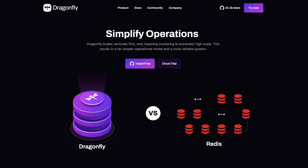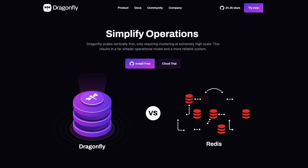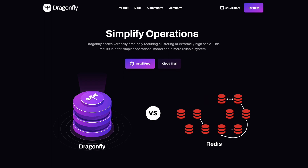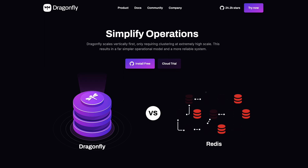On a single beefy machine, Dragonfly is able to handle millions of operations per second and up to one terabyte of in-memory data. Basically, Dragonfly scales vertically first, and it would only require clustering at an extremely high scale. This results in a way simpler operational model and a more reliable system.